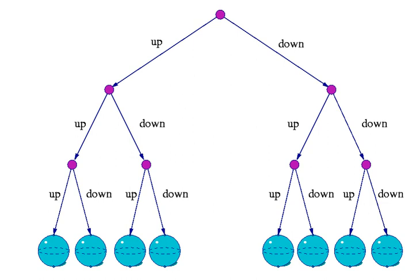Wheeler contributed the title, Relative State. Everett originally called his approach the Correlation Interpretation, where Correlation refers to quantum entanglement.